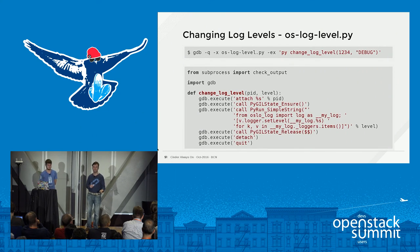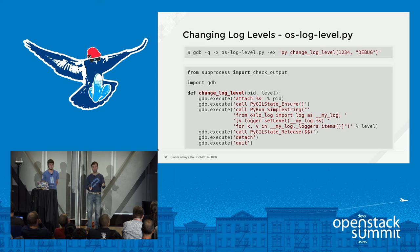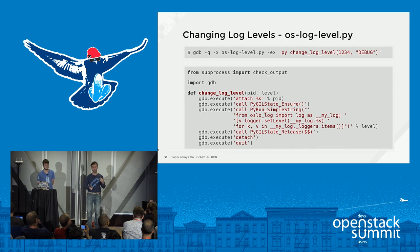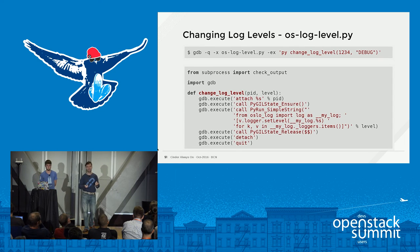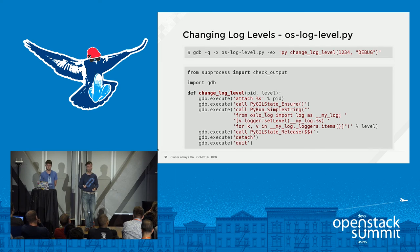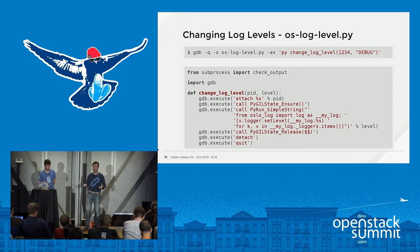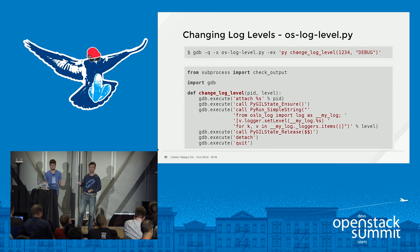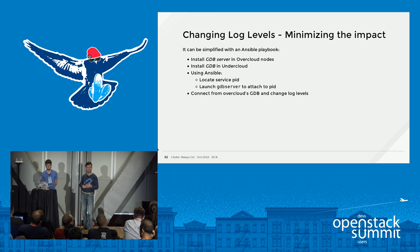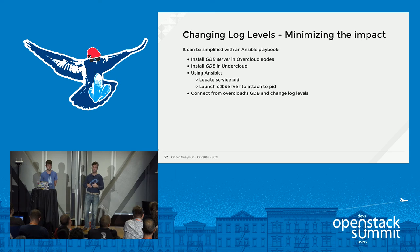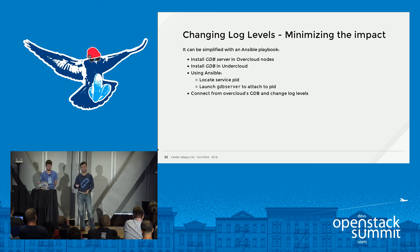You ask GDB to run a Python script that attaches to the running process, pausing it briefly — about half a second or less — runs some Python code to change the log level, then detaches from the process. This is not the nicest approach, but if the alternative is stopping your Cinder volume service for perhaps half an hour just to change a log level, you may want to consider it. You can also use a GDB server on your overcloud so you don't have to install the full GDB.